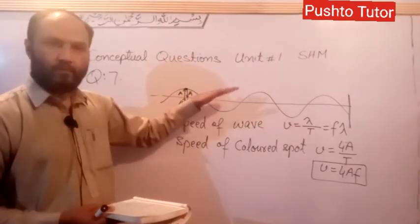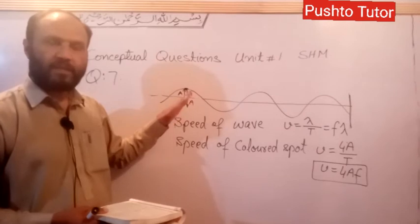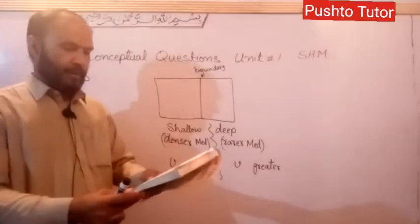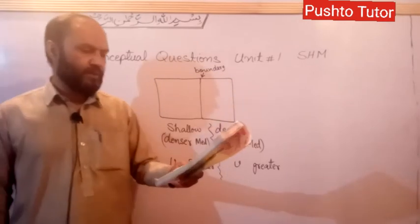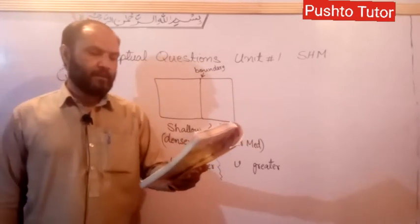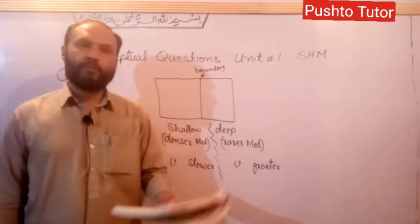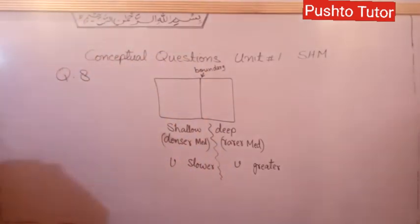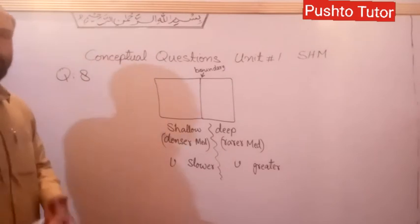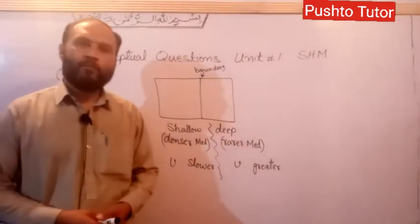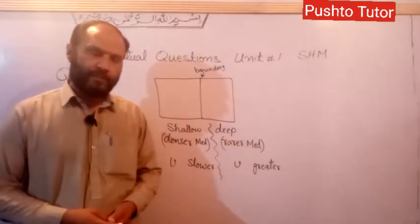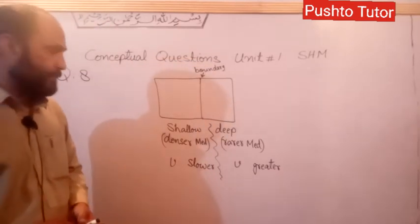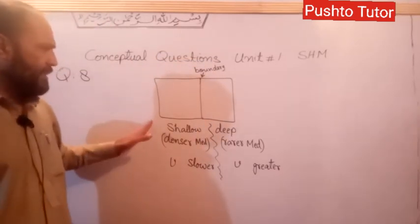The wave can move forward but the colored spot can only vibrate or oscillate about the mean position. The next question is: why do waves refract at the boundary of shallow and deep water?